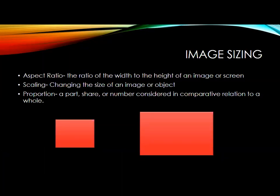So, image sizing. Aspect ratio is the ratio of the width to the height of an image on screen. Scaling is changing the size of an image or object. Proportion is a part, share, or number considered in comparative relation to a whole. Just make sure you know the difference between the three: aspect ratio is that width-to-height ratio, scaling is changing that size, and proportion is a part or share.